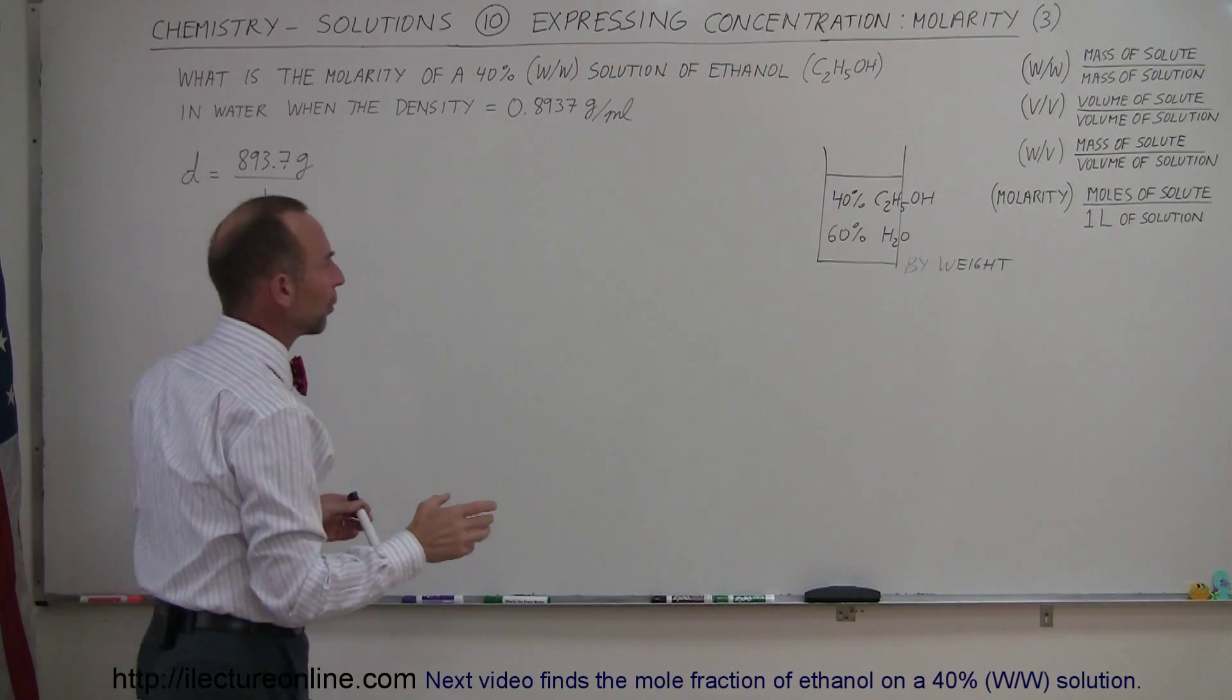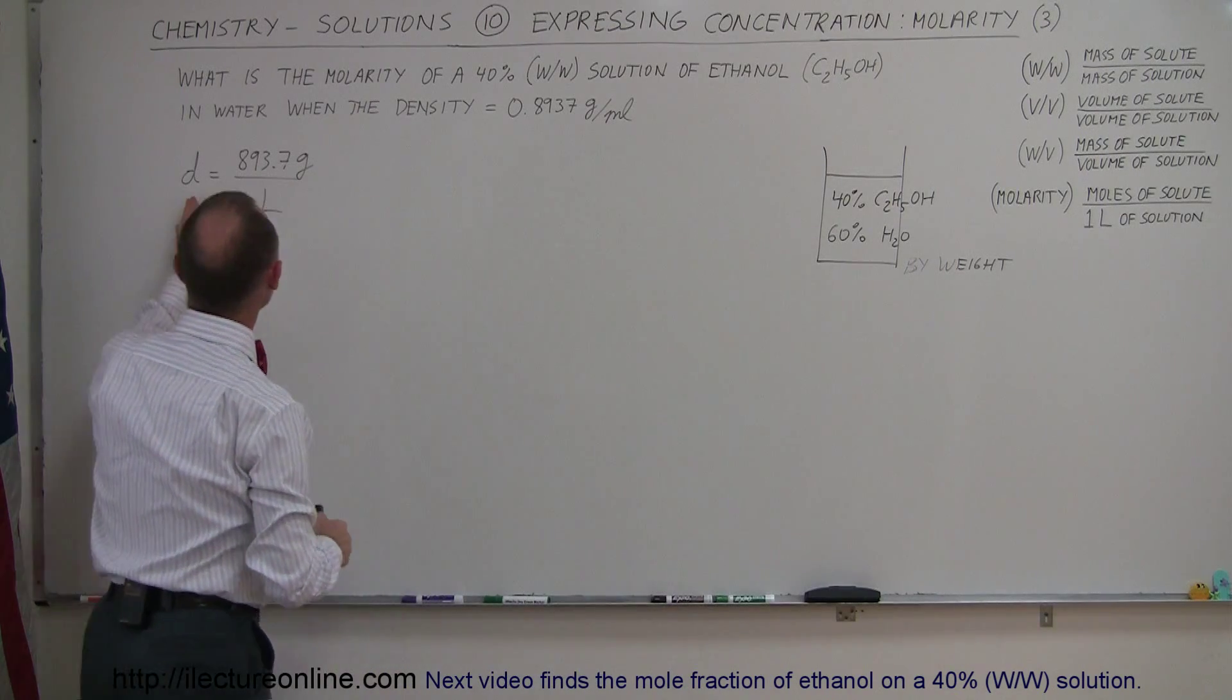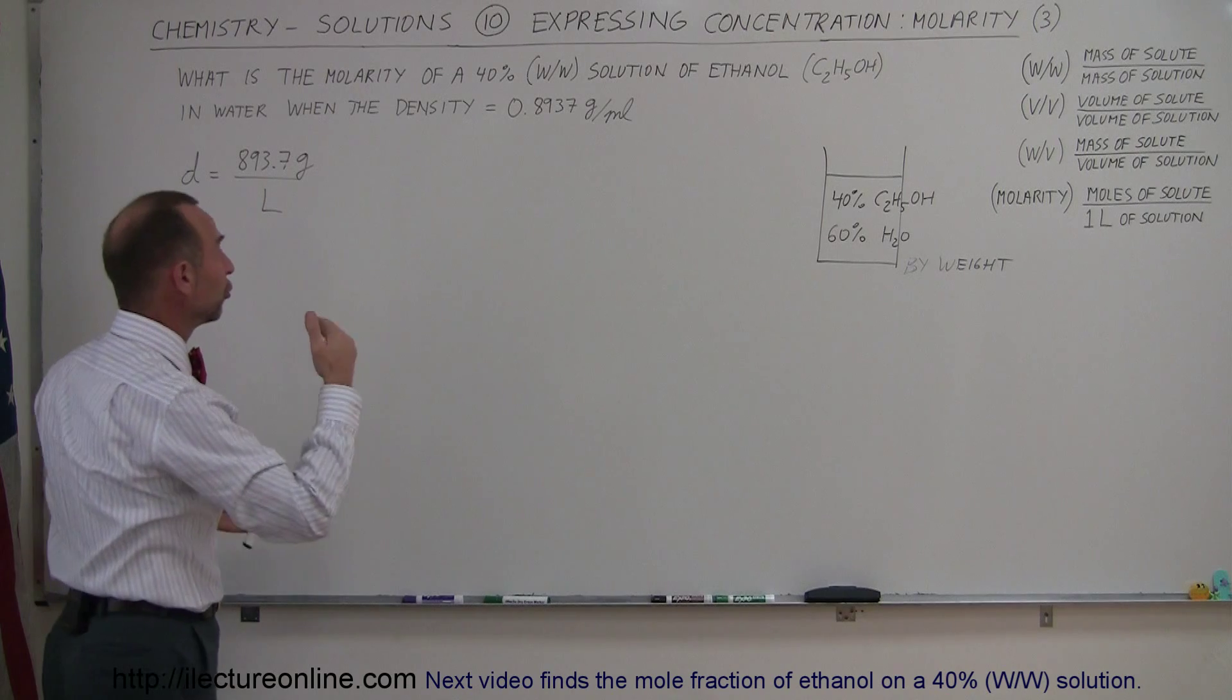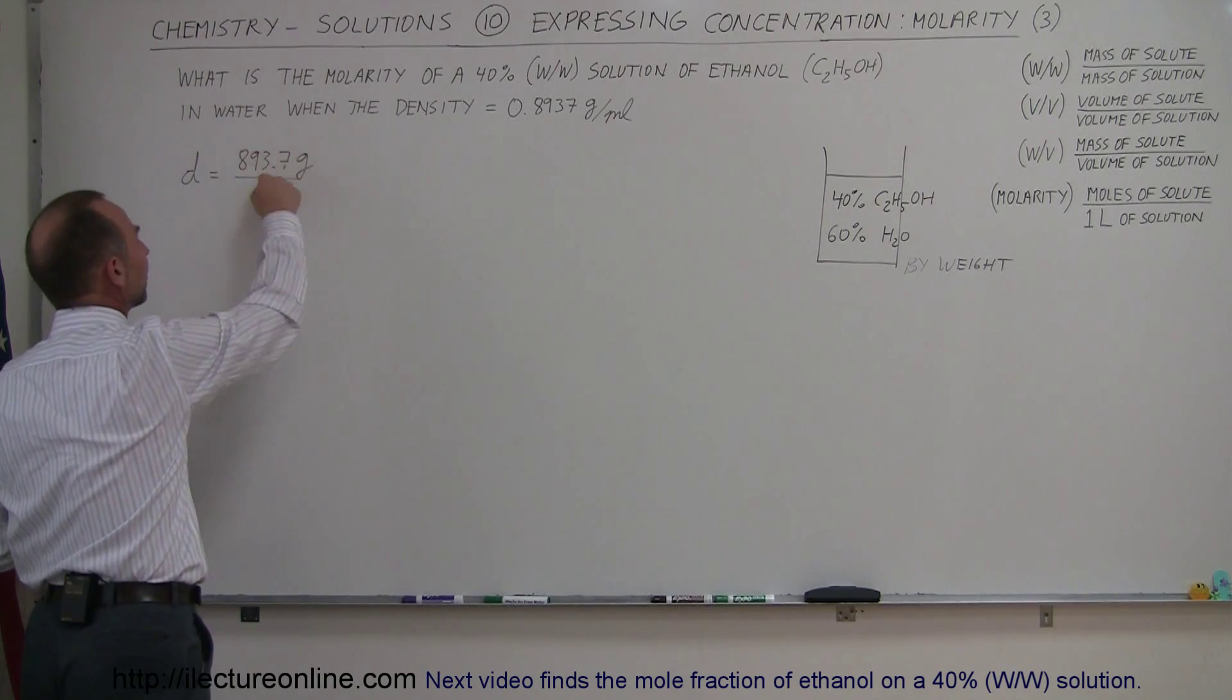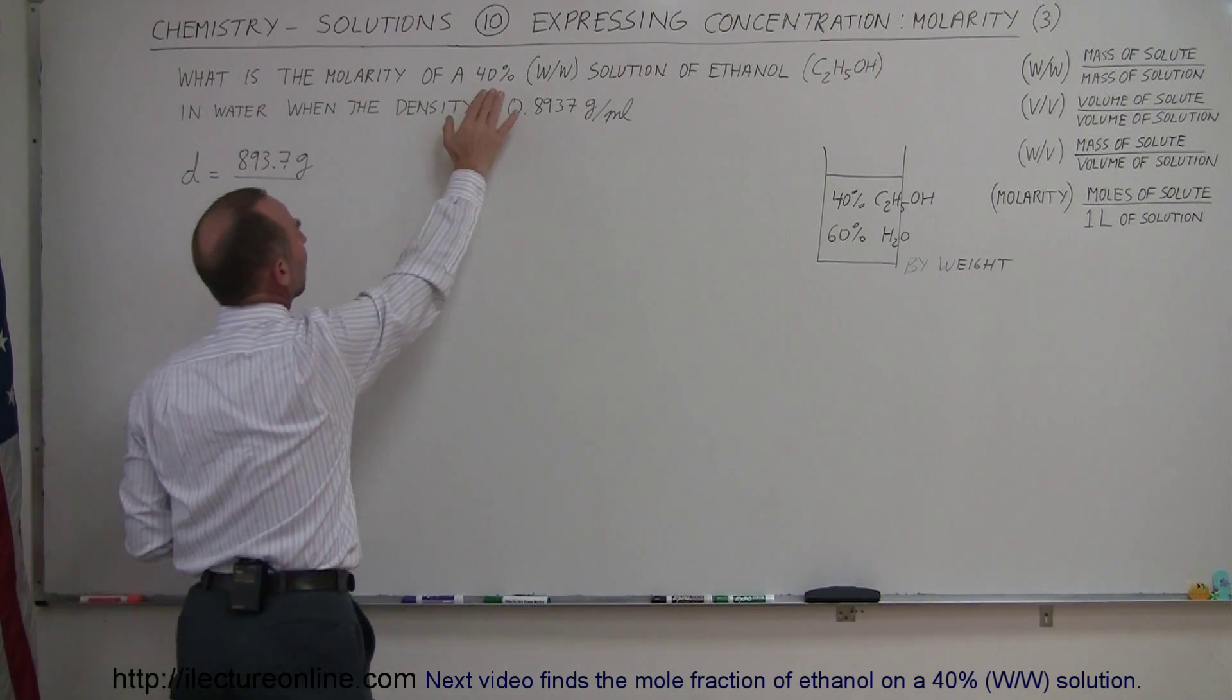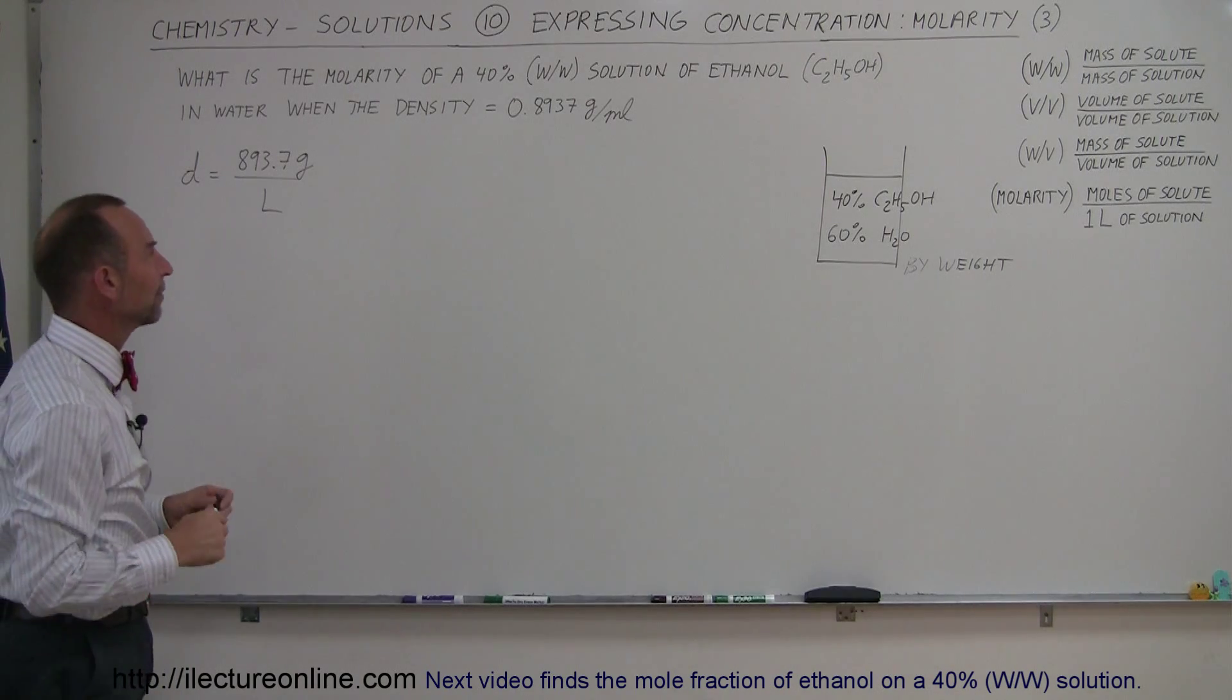So we realize that we're going to need moles per liter and we start out with the density. The density is grams per liter, so then we have to convert from grams to moles, also realizing that this is not the mass of the ethanol, this is the mass of the total solution. So we have to take 40% of that mass to come up with the mass of the solute, the mass of the ethanol.